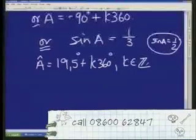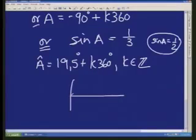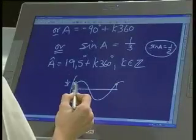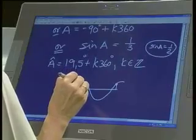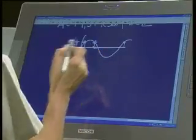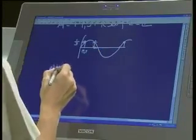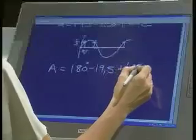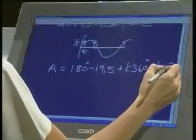But that is not the only angle. If I draw the sine curve again, there it is. There's your 19.5, round about there, that's giving you a third. Somewhere over here we're going to get our next solution, 360 degrees later. So there's another little solution over here that we haven't yet captured, and that solution there will be 180 minus the 19. So that would be 180 minus 19.5, plus k360, where k is an integer value.